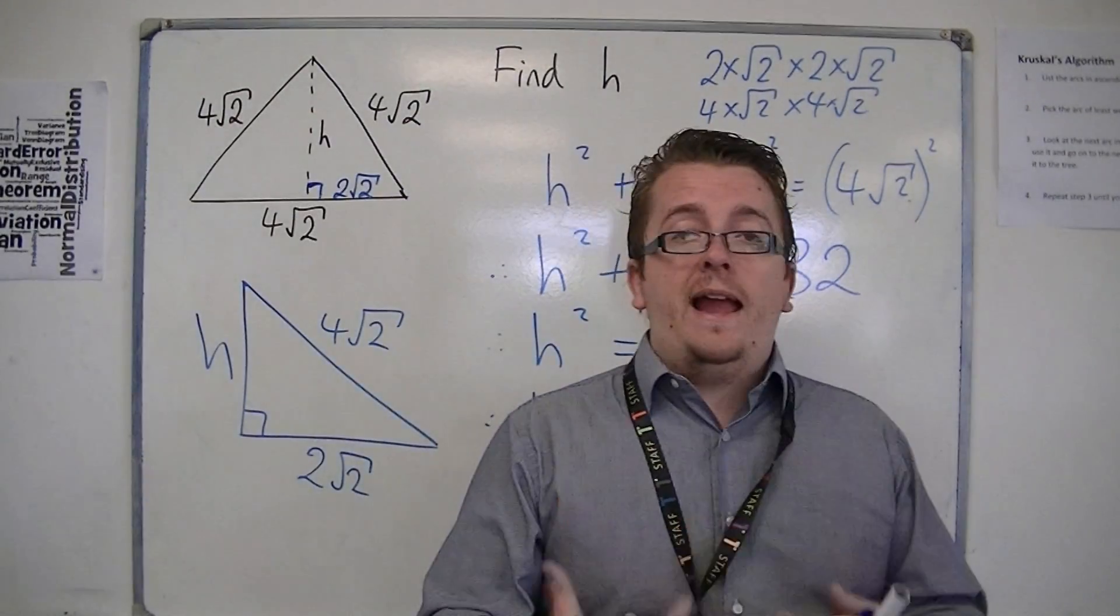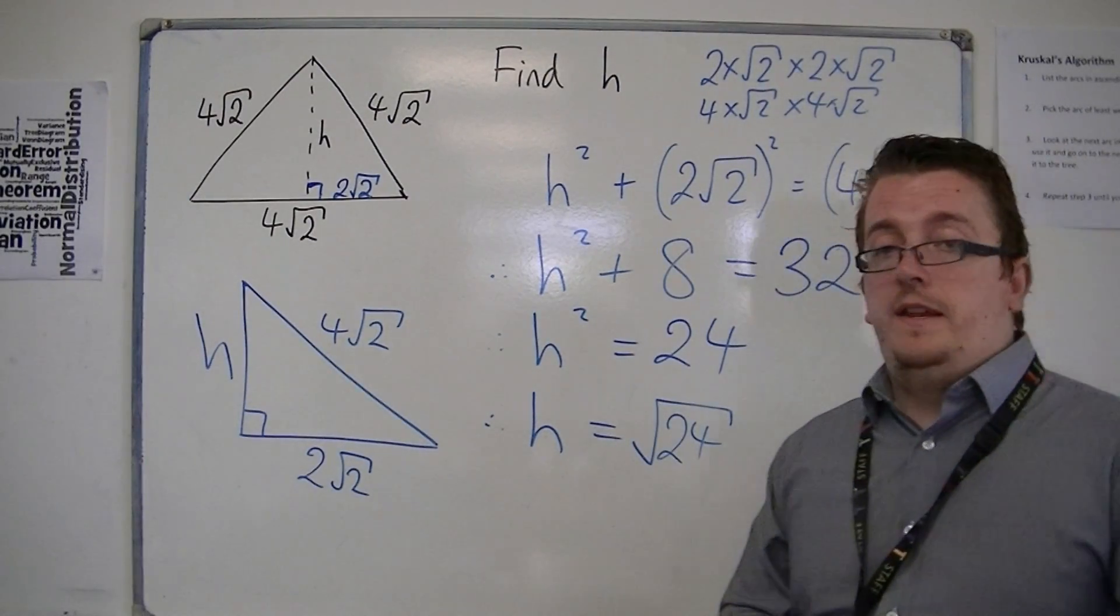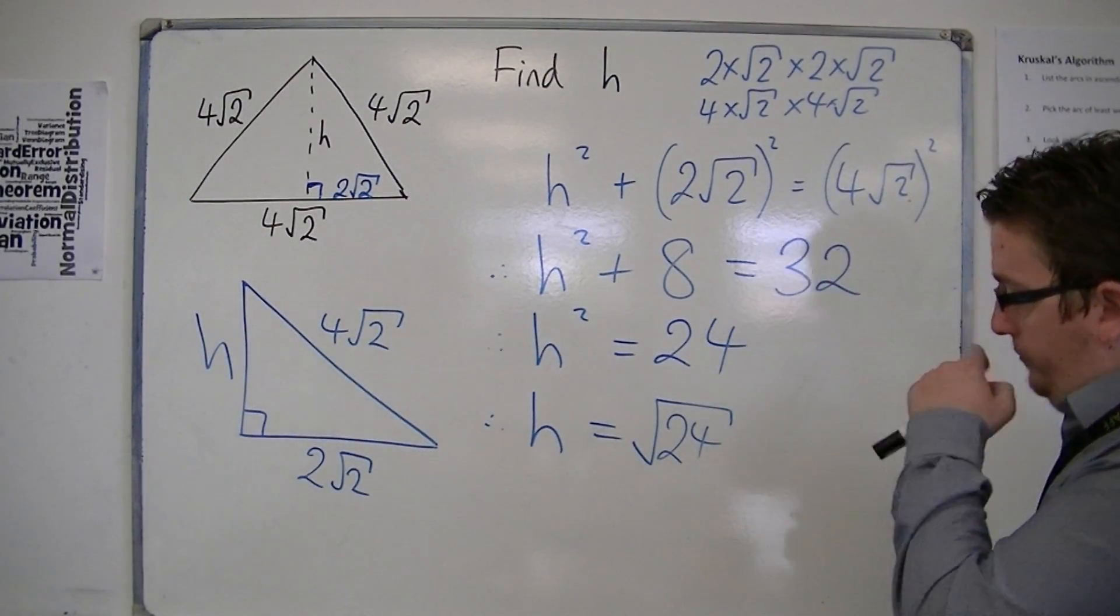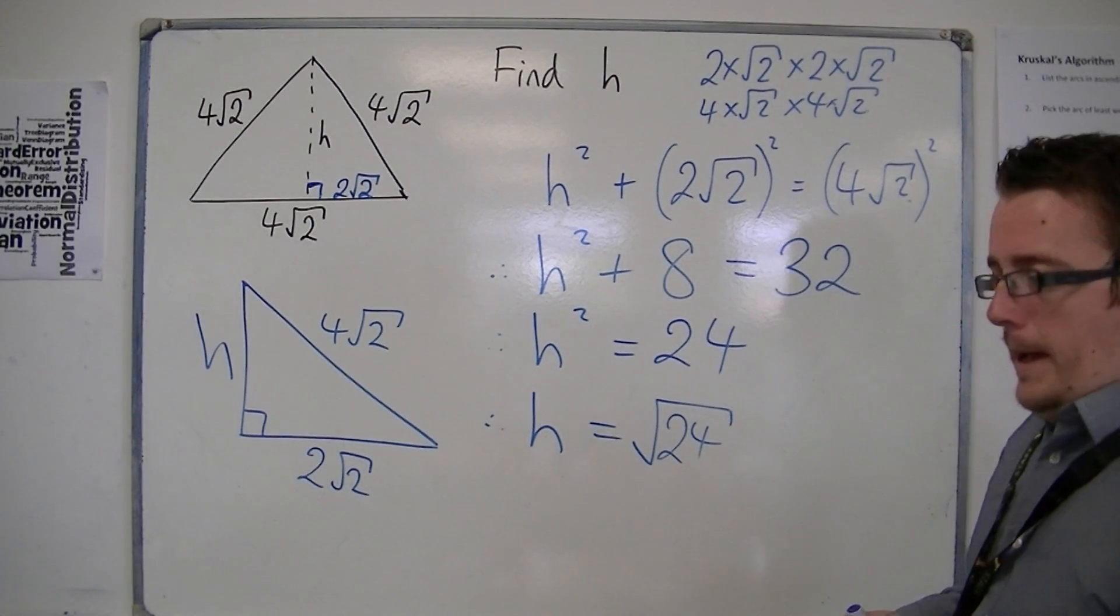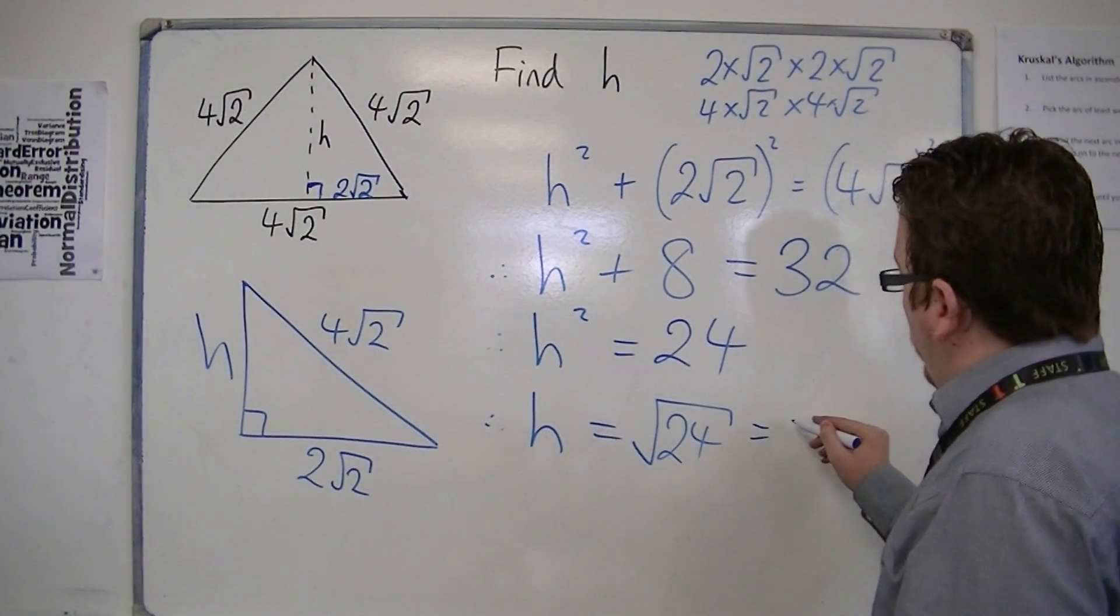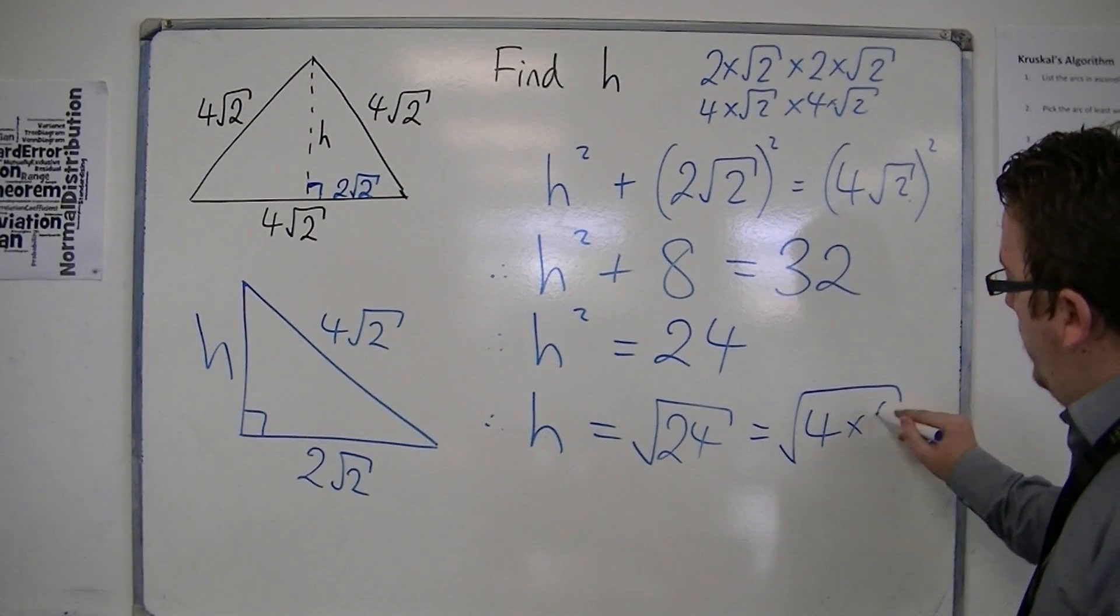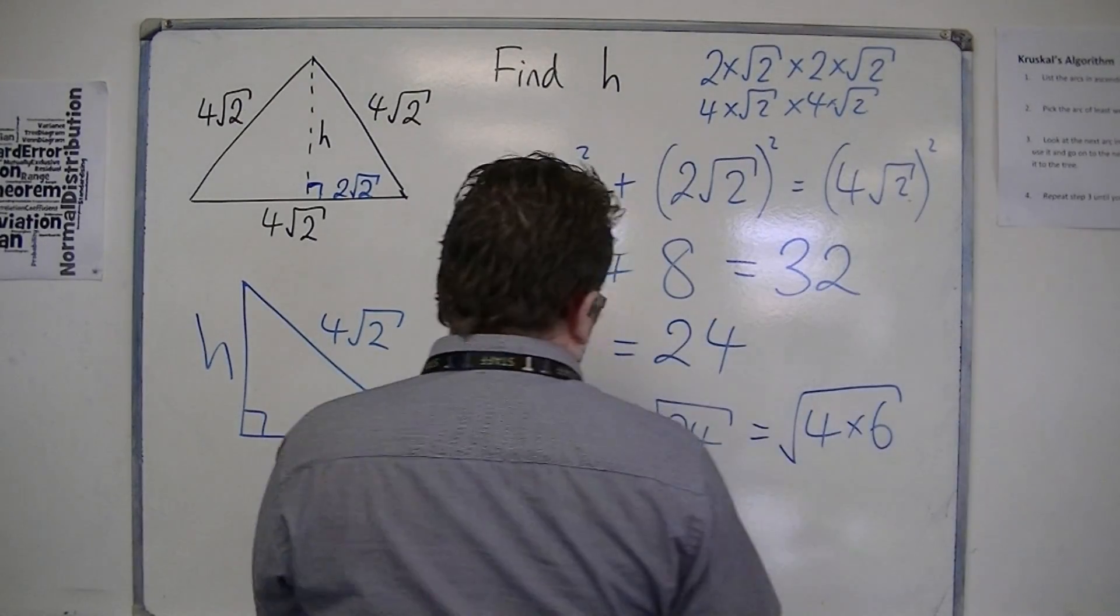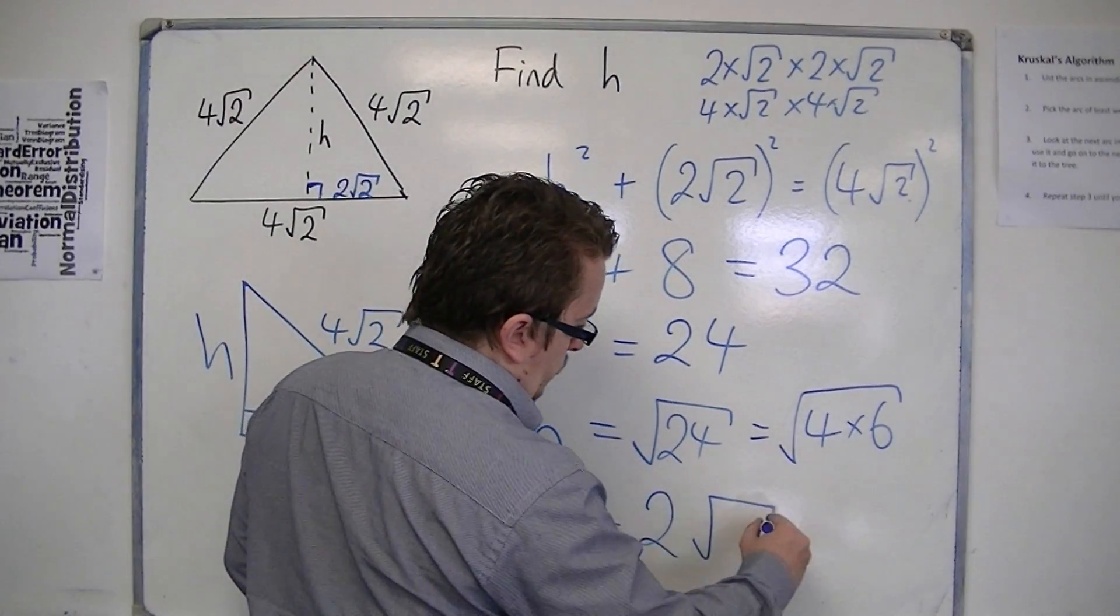Now, root 24 can be simplified. It's likely in this case that you would be asked to find it in most simplified form. So 24, a square number that goes into it, is 4. So this is the square root of 4 times 6, which is 2 root 6.